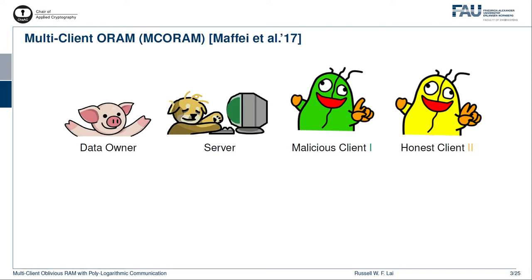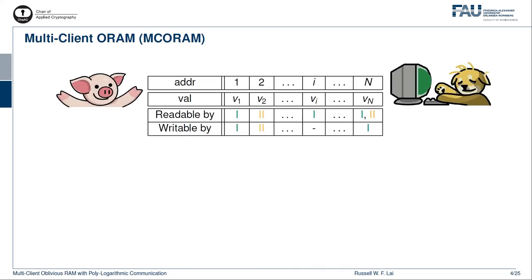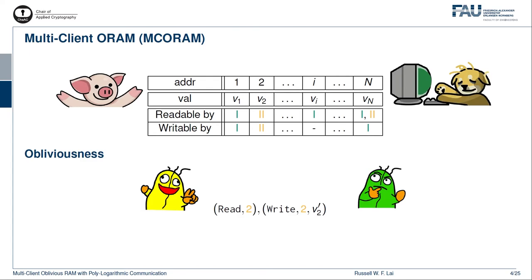In this setting, we have a data owner, a server, and multiple clients. The server and some of the clients might be corrupt. For example, here we have a malicious client 1 with one finger and an honest client 2 with two fingers. In more detail, the data owner shares a database in encrypted form to the server, together with an access control policy. In this example, client 1 is allowed to read and write address 1, while client 2 is allowed to read and write address 2. An MC ORAM should provide obliviousness: if client 2 reads or writes address 2, client 1 should not know what client 2 is doing. In fact, client 1 should not even know that it is client 2 who is accessing the database.